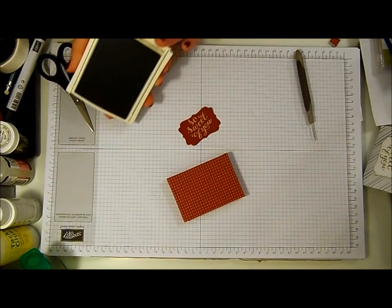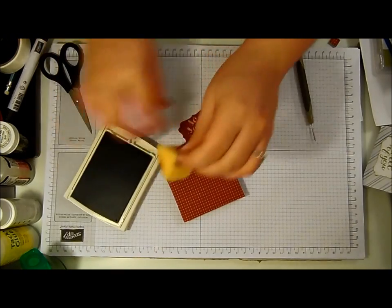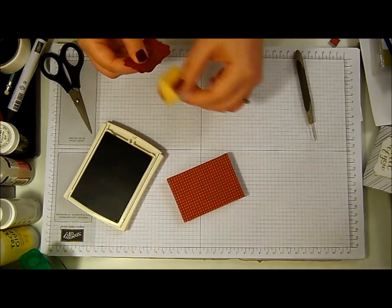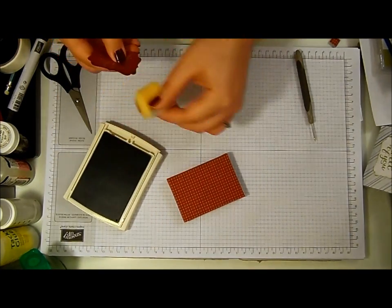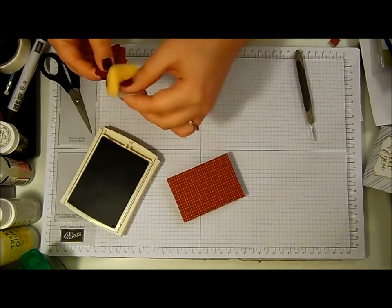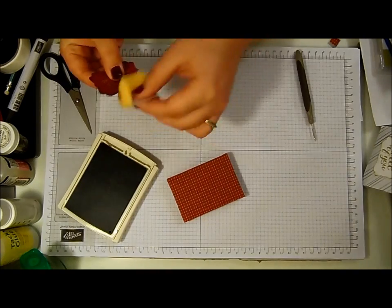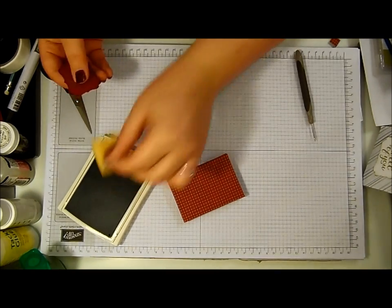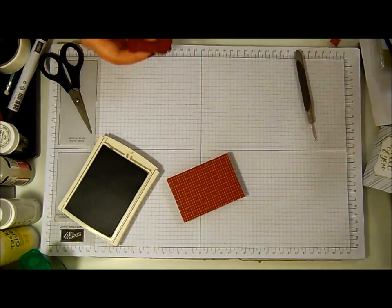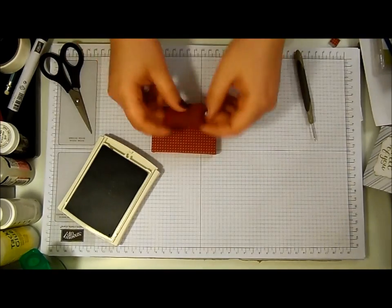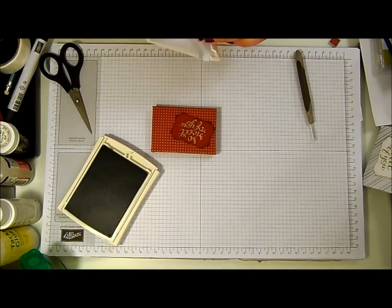And then we have our little label that we heat embossed. And I've just got some crumb cake ink and my sponge. I'm just going to sponge the edges of this. I'm actually starting to get a bit obsessed with sponging edges. I blame Poodles. Sorry Sam but you get the blame for a lot of things.